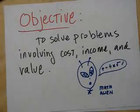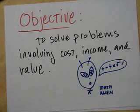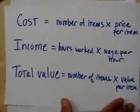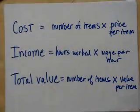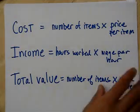Cost, income, and value? What are you talking about? Hey, did you see the math alien? All right. Cost. Simply the number of items times price per item. Income. Hours of work times wage per hour. Total value, number of items times value per item. Let's do a couple problems and see if we can figure this out. Ready? Here we go.